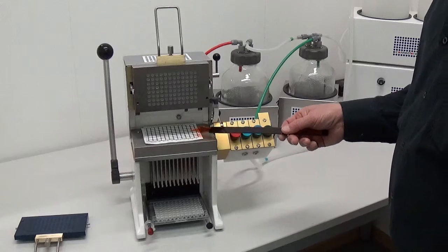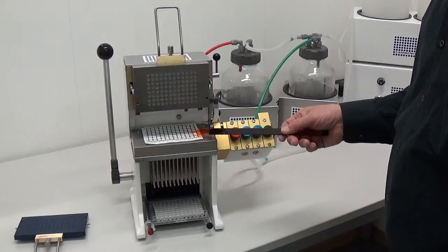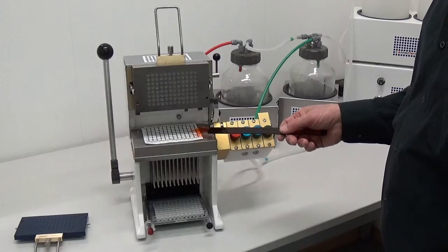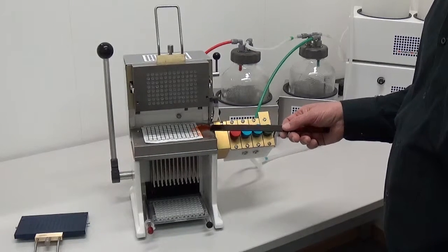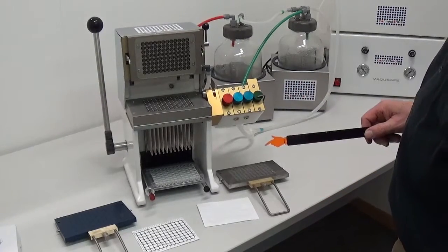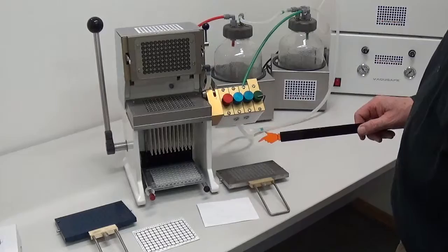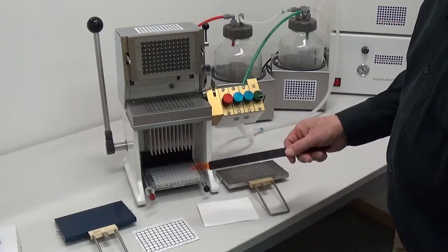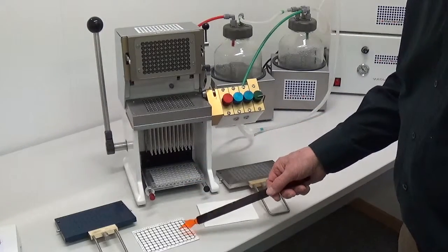These filters are then washed free from unbound materials in a second step. The operation of the harvester depends on the filter you want to use.